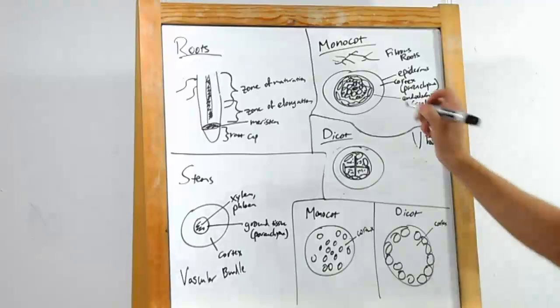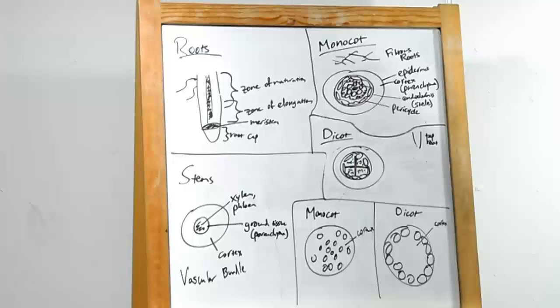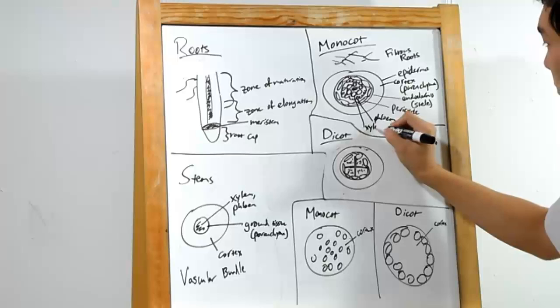First up is this ring of cells known as the pericycle. The pericycle grows. It allows the root to get thicker, as opposed to just longer with the meristem. Now, immediately inside that, we have phloem. If you remember, phloem moves minerals and nutrients. Then we have a ring of xylem. This one moves water.